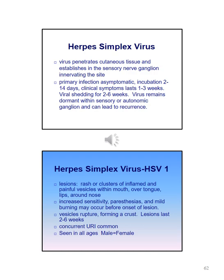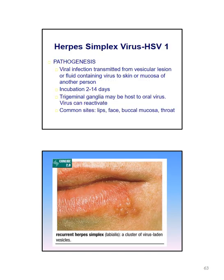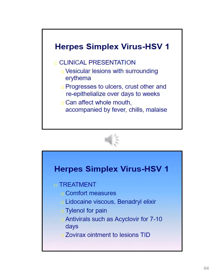HSV-1 lesions can be described as a rash or clusters of inflamed and painful vesicles within the mouth, over the tongue, lips, and around the nose. There is increased sensitivity, paresthesias, and mild burning which may occur before the onset of a lesion. Vesicles rupture forming a crust and lesions can last 2–6 weeks. A concurrent URI is common. The clinical presentation includes vesicular lesions with surrounding erythema that can progress to ulcers which crust and re-epithelialize over days to weeks, affecting the whole mouth accompanied by fever, chills, or malaise.